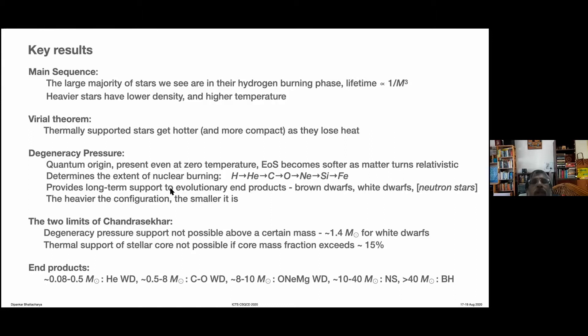Degeneracy pressure also provides long-term support to evolutionary end products — brown dwarfs, white dwarfs, and partially neutron stars. Neutron stars are held not just by neutron degeneracy pressure but also nuclear interactions, so partial support comes from degeneracy pressure.